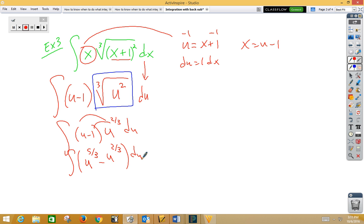So now let's go ahead and integrate that. So again, using the power rule, we're going to be adding 1, 5 thirds plus 1 would be 8 thirds. So we have 3 eighths, u to the 8 thirds.